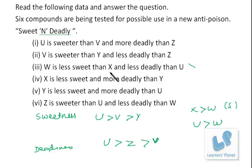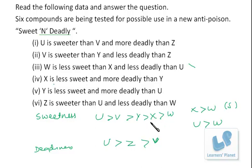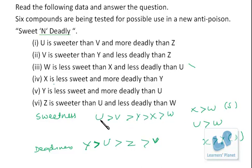X is sweeter than W. X is less sweet and more deadly than Y — so X is less sweet than Y and I place X accordingly, with W below X in sweetness. Y is less sweet and more deadly than U, so Y goes above U in deadliness. Z is sweeter than U and less deadly than W.